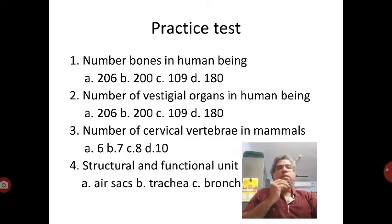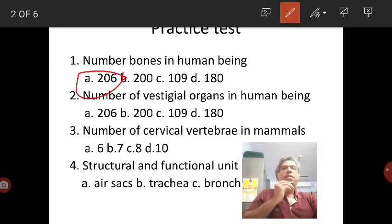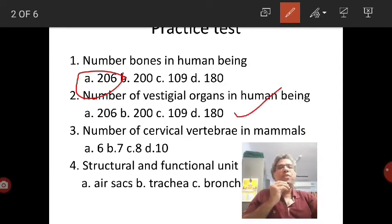Number of bones in human beings is 206. Number of vestigial organs in human beings is 180.